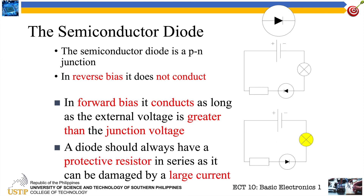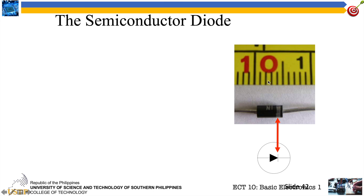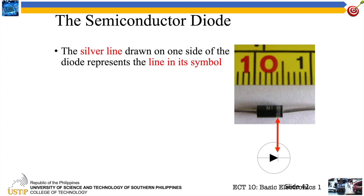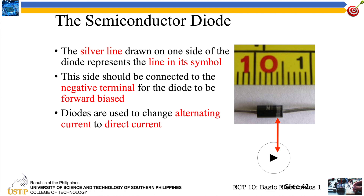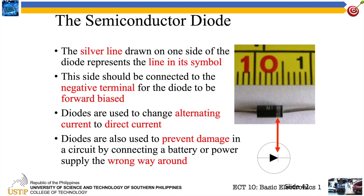A diode should always have a protective resistor in series as it can be damaged by a large current. The silver line drawn on one side of the physical diode represents the line in its symbol and should be connected to the negative terminal for the diode to be forward biased. Diodes are used to change alternating current to direct current. They are also used to prevent damage in a circuit by connecting a battery or power supply the wrong way around, and therefore may act as a switch.